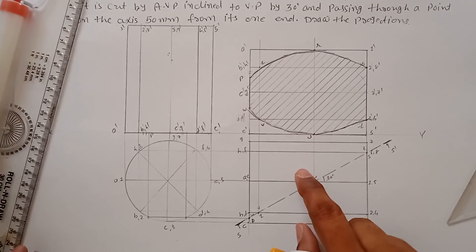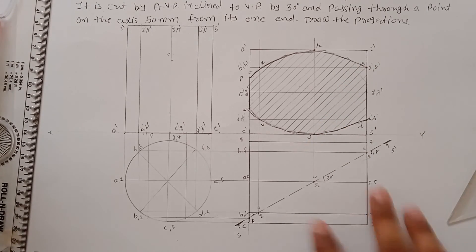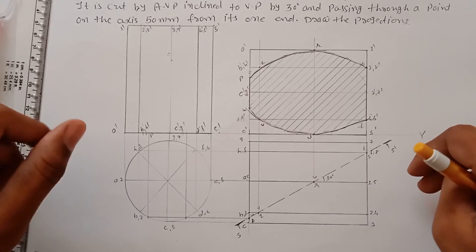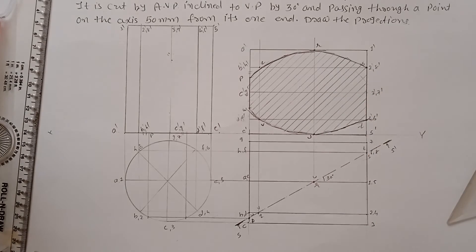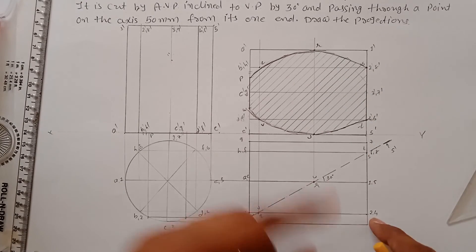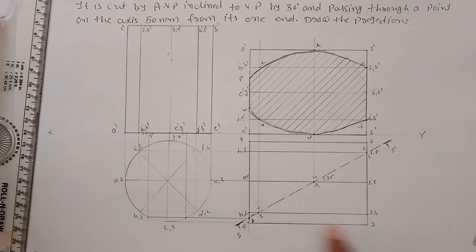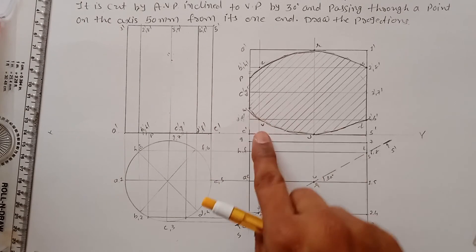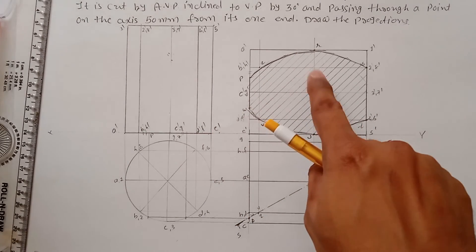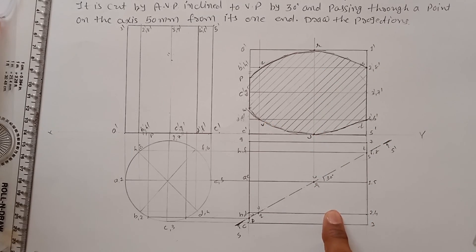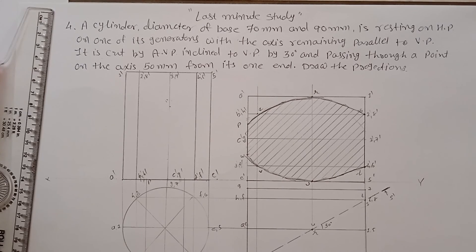In this problem, they have not asked to draw the true shape, so we skip that step — the problem is already quite long. However, if the true shape is required, draw perpendicular lines from the corners, measure each point from the X-Y line, and reproduce the same shape. This completes problem number four from the section of solids.